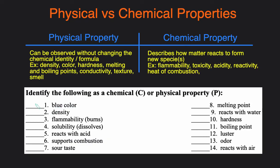The first one, blue color, this is going to be a physical property because it's just something you can observe. The compound isn't undergoing any type of chemical change. Density, again, this is something that you can observe. You could just measure the mass divided by the volume.